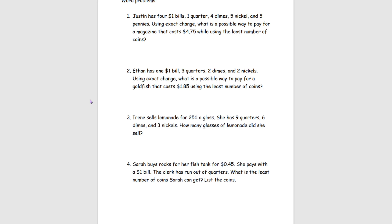Moving on to our word problems. Justin has 4 $1 bills, 1 quarter, 4 dimes, 5 nickels, and 5 pennies. Using exact change, what is a possible way to pay for a magazine that costs $4.75 while using the least number of coins? Since we're trying to use the least amount of coins, we start with dollar bills. He has 4 $1 bills which equals $4.00, so we cross that out. Now we go to the next biggest coin, the quarter, which adds $0.25, giving us $4.25.